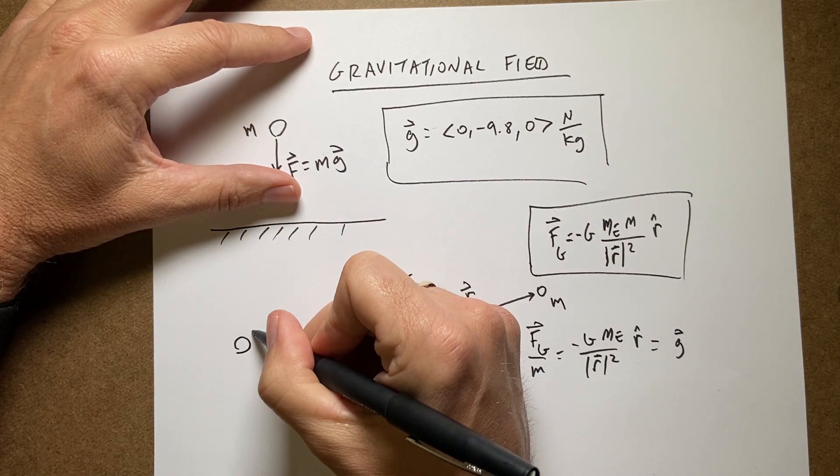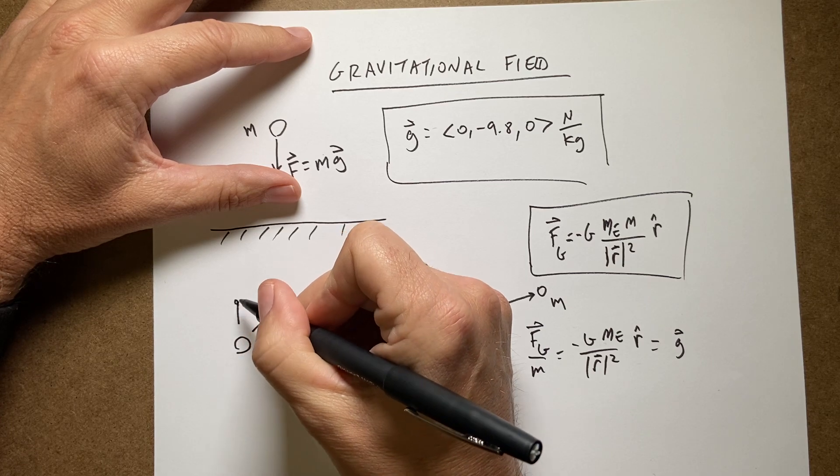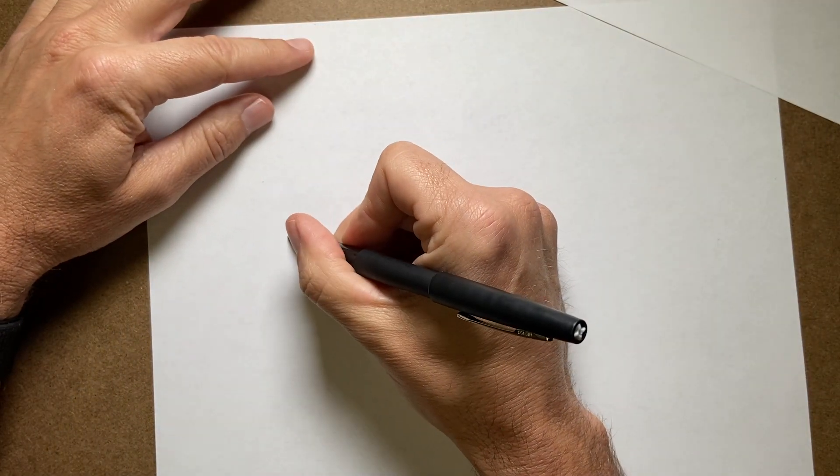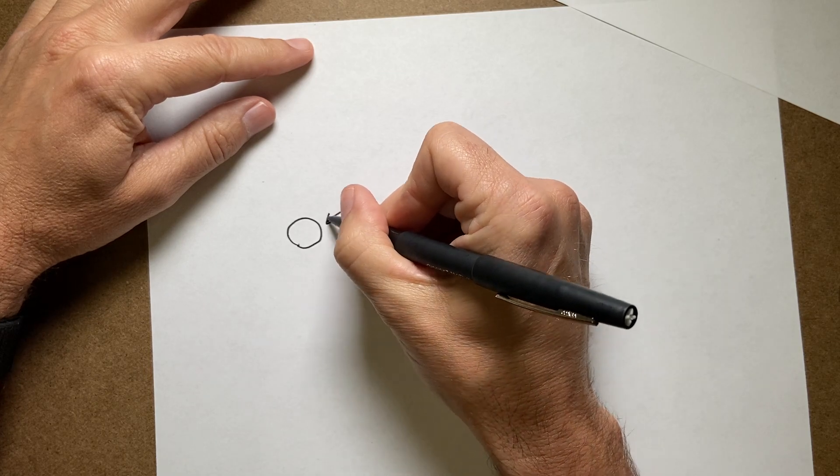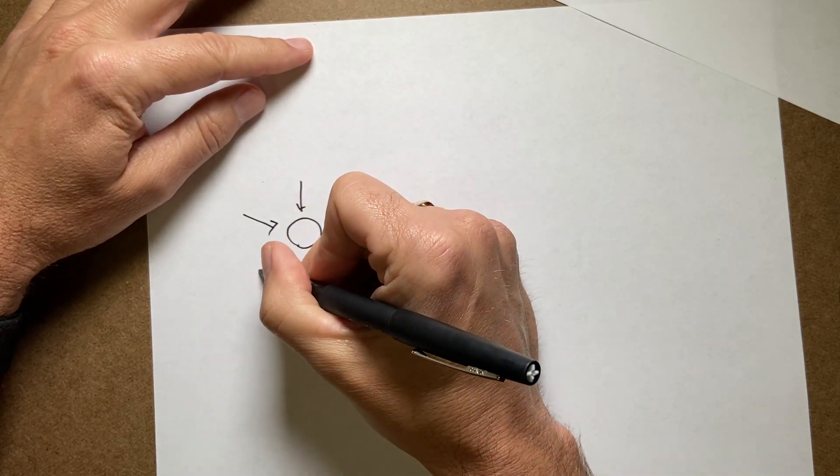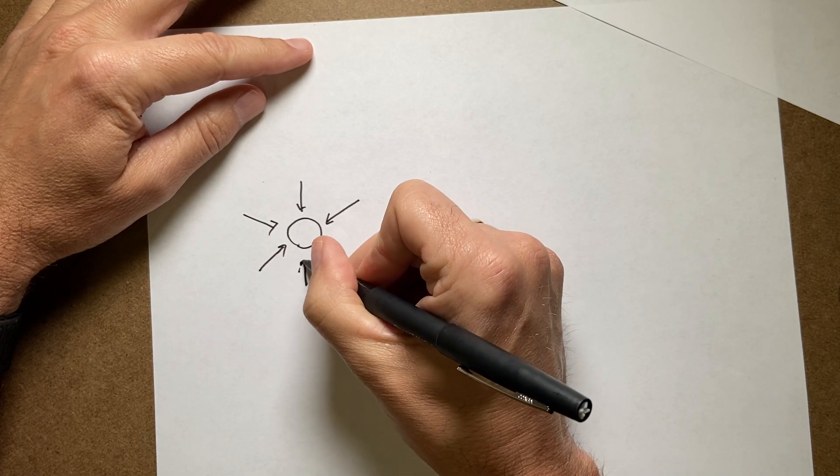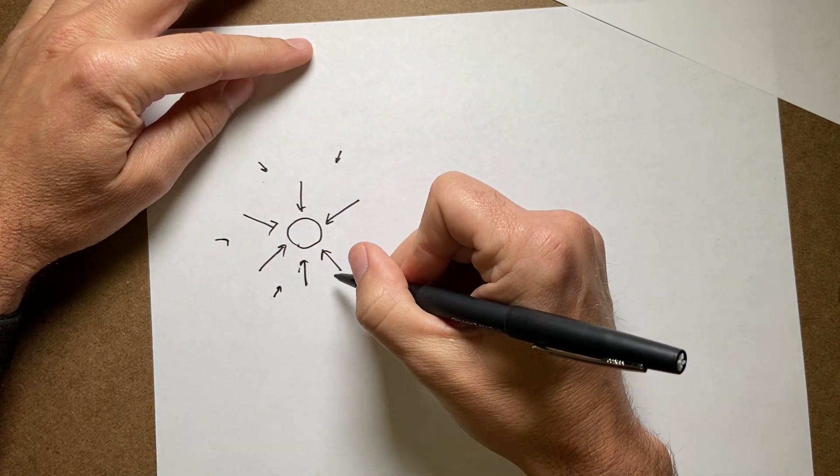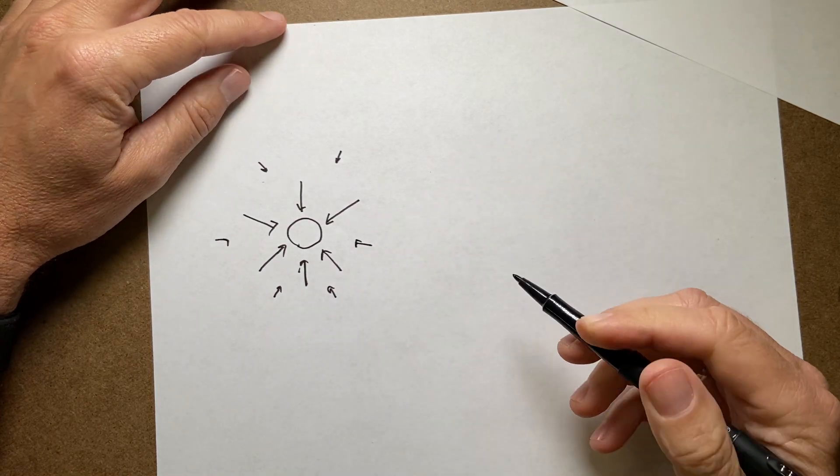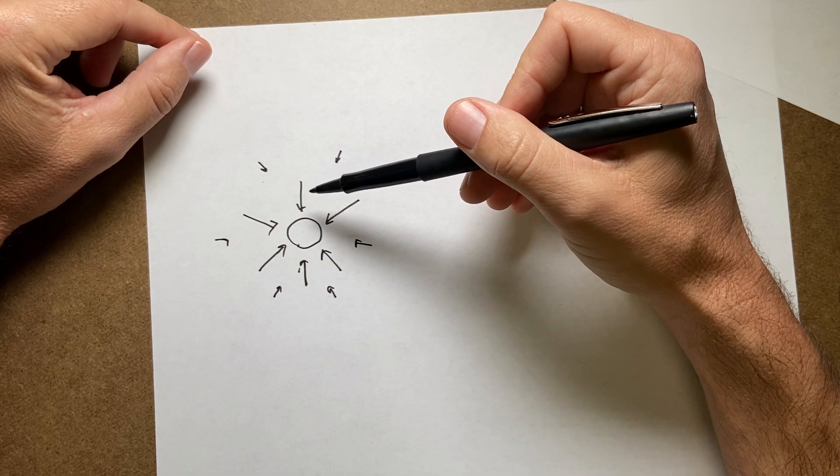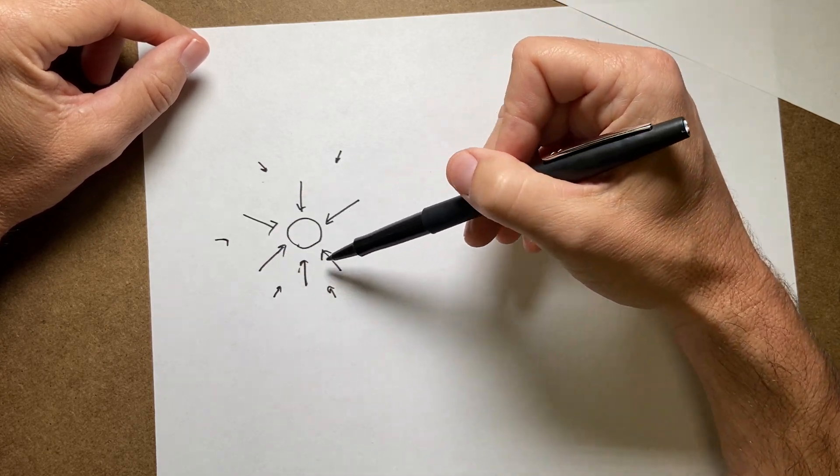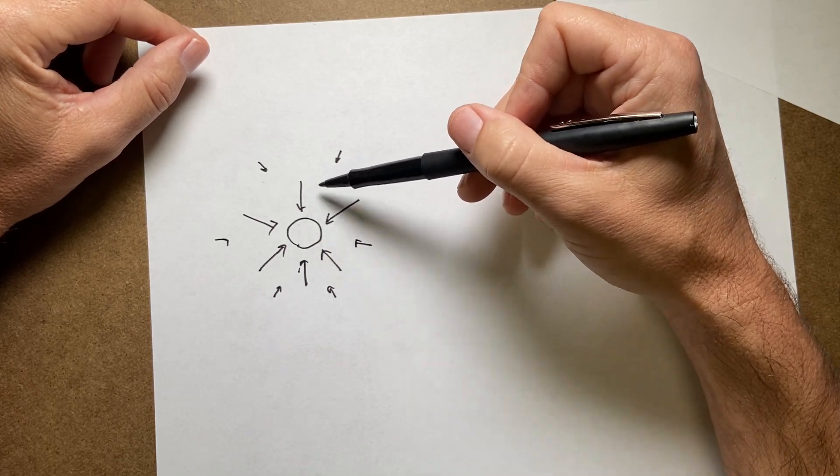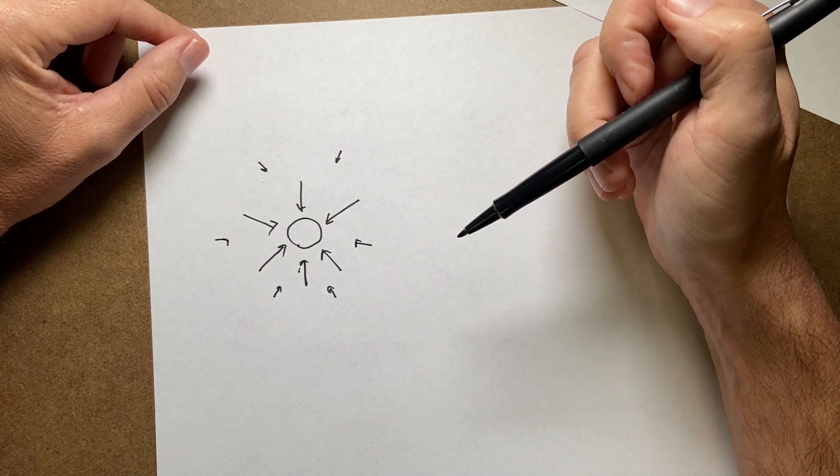But if I want to describe this, I could draw my earth right here. Nope, that's not what it looks like. Take that back. Here's my earth. This is a vector field. This shows the direction and the magnitude of the vector at different locations. So if I'm closest to the earth, I have a gravitational field pointing towards the earth, and it gets stronger the closer I get. These vectors over here are further away, and that's the gravitational field.